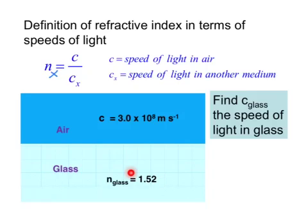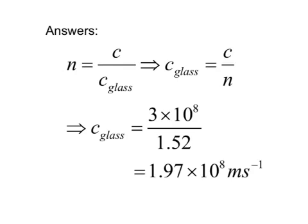So, the final answer is, the speed of light in glass is 1.97 x 10 to the power 8 meter per second. As against, speed of light in air is 3 x 10 to the power 8 meter per second.